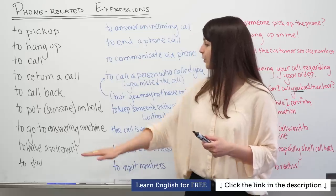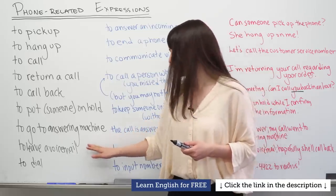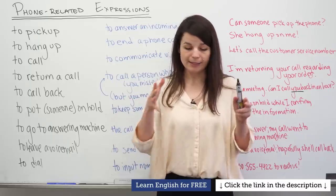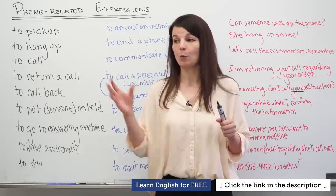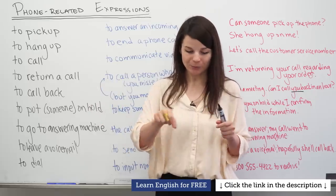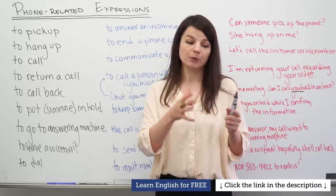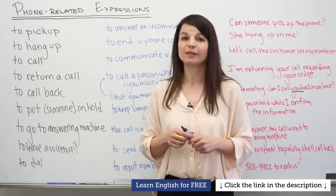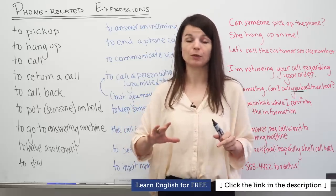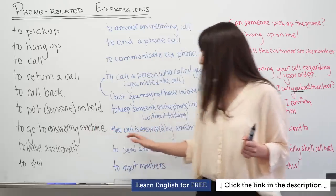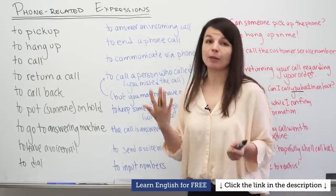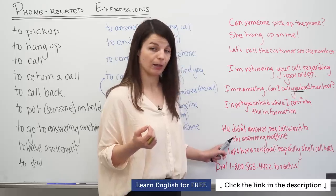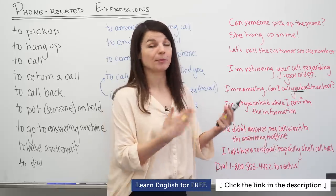"To go to answering machine" means the call is answered by a machine. This expression is a bit old-fashioned — before mobile phones, there was a separate machine with tapes or digital storage used only for answering calls when someone was unavailable. Today we don't use actual answering machines, but the expression can still be used. Example: "He didn't answer. My call went to the answering machine," meaning your call was received by an automated voice system.